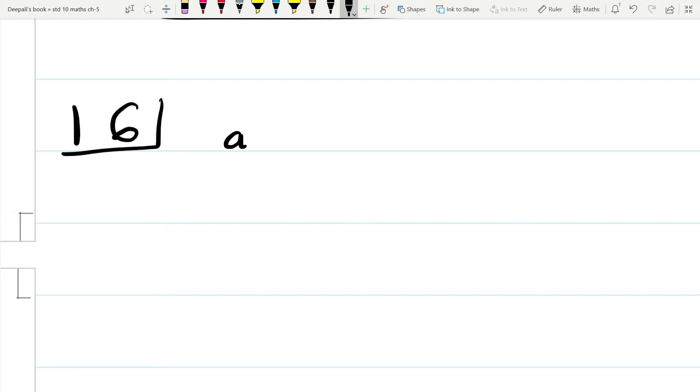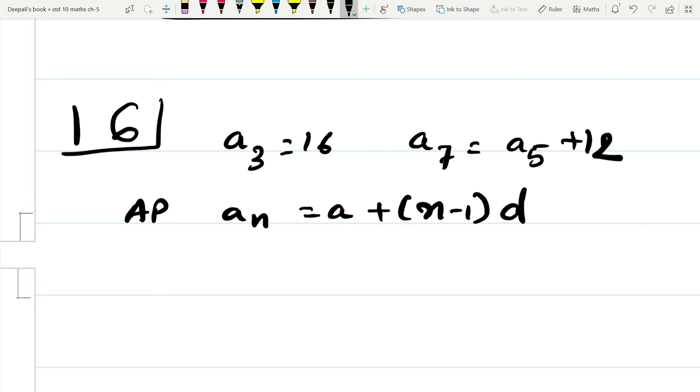So again simple, A3 is equal to 16, A7 is equal to A5 plus 12. Now we know that AP AN is equal to A plus N minus 1D. Therefore A plus 2D is equal to 16 and A plus 6D is equal to A plus 4D.